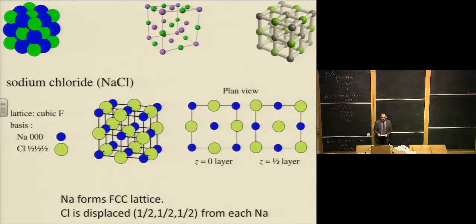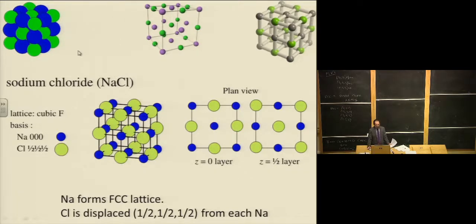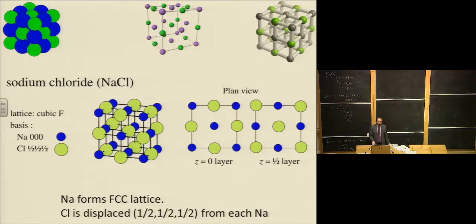As an example of lattice plus basis: the sodium chloride structure. Sodium chloride is very ionic — sodium gives up the electron, chlorine takes it. If you look carefully, the sodium atoms form an FCC lattice. And for every sodium atom, there is a chlorine atom displaced by (1/2,1/2,1/2) from the sodium atom — that gives you the positions of all the chlorine atoms.